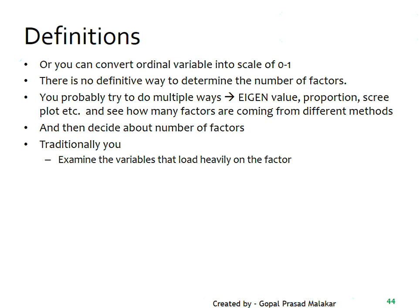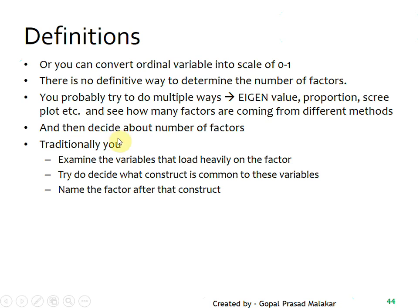If two factors emerge as important, you look at all the variables that load heavily on those factors. Then you try to decide what construct is common to those variables and give the factor a name, because if you know that these three variables load heavily on a particular factor, you try to name what latent concept that factor is measuring.